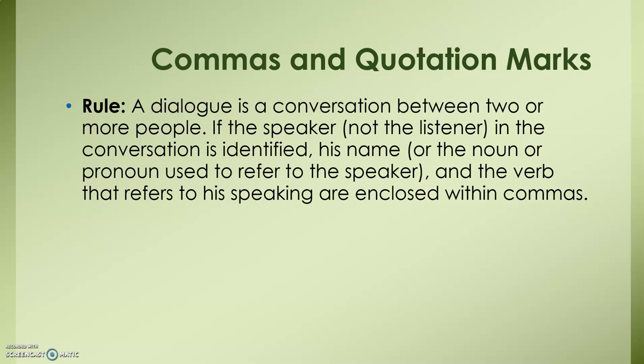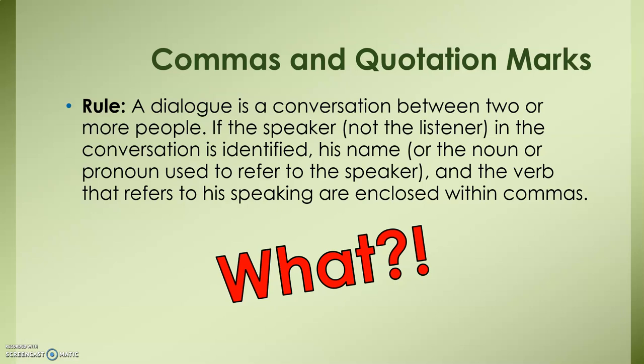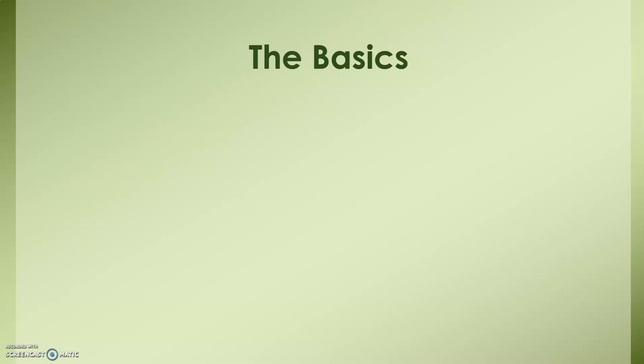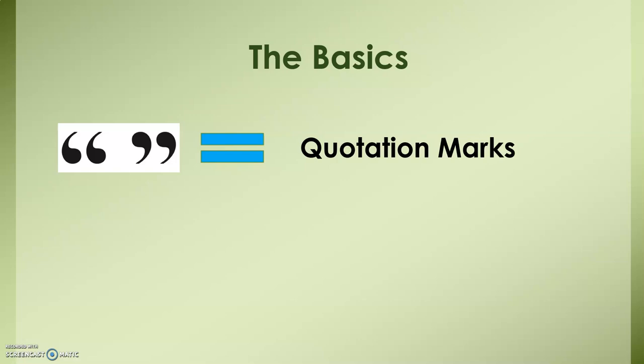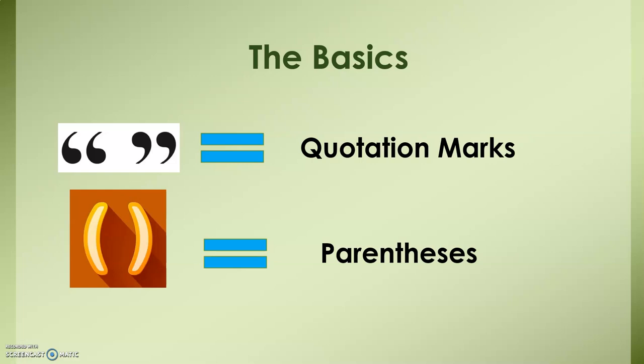Let's pause for a moment and break this down a little bit more. First, let's go over some basic punctuation marks. These guys right here look like two backwards commas and then two apostrophes together — these are quotation marks that we are referring to. Students often get them confused with parentheses, but they are not the same thing, and quotation marks have their own rules with commas that we will go over in this presentation.